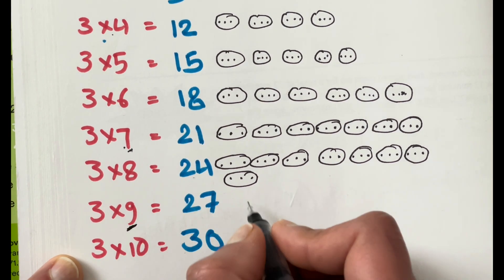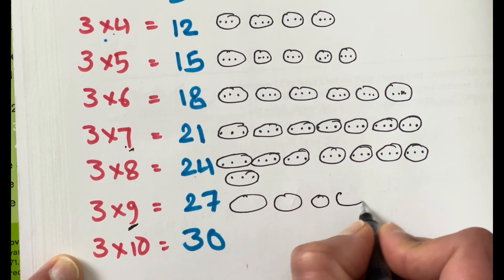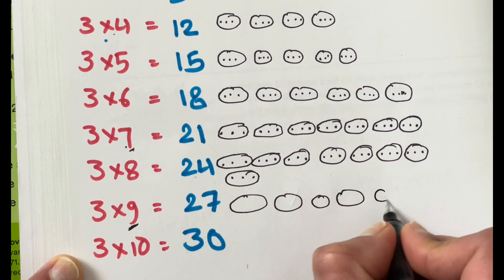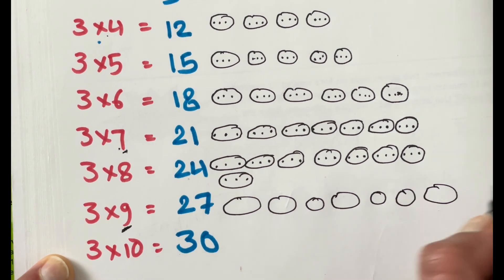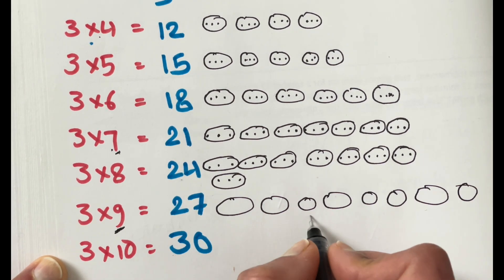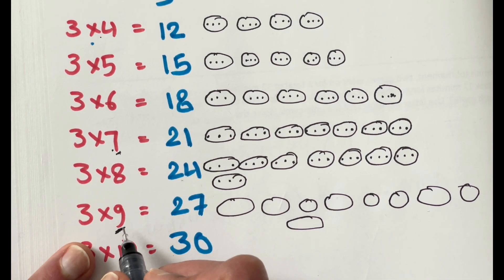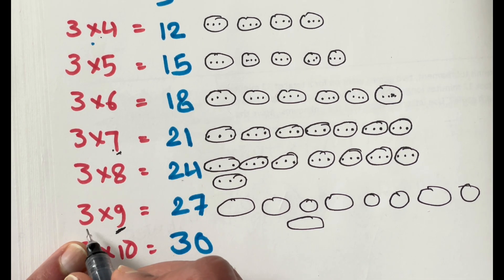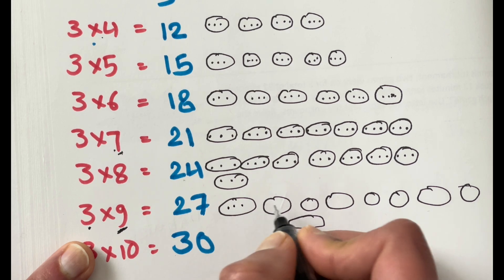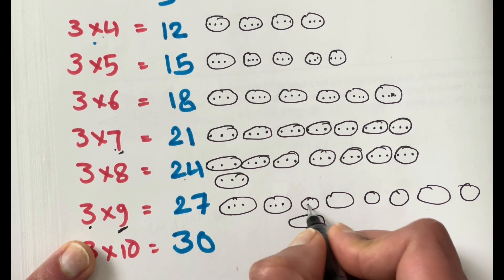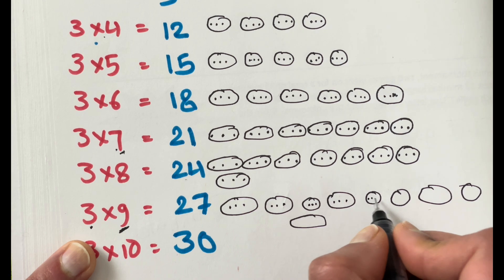We will make nine groups: one, two, three, four, five, six, seven, eight, and nine. Now how many numbers should we put? Three in each group: one, two, three, four, five, six, seven, eight, nine, ten, eleven, twelve, thirteen, fourteen, fifteen.